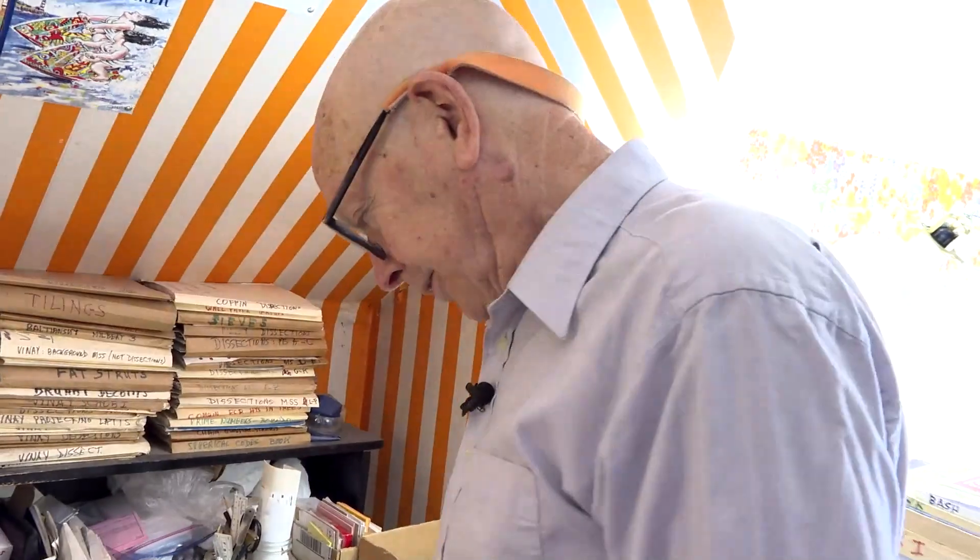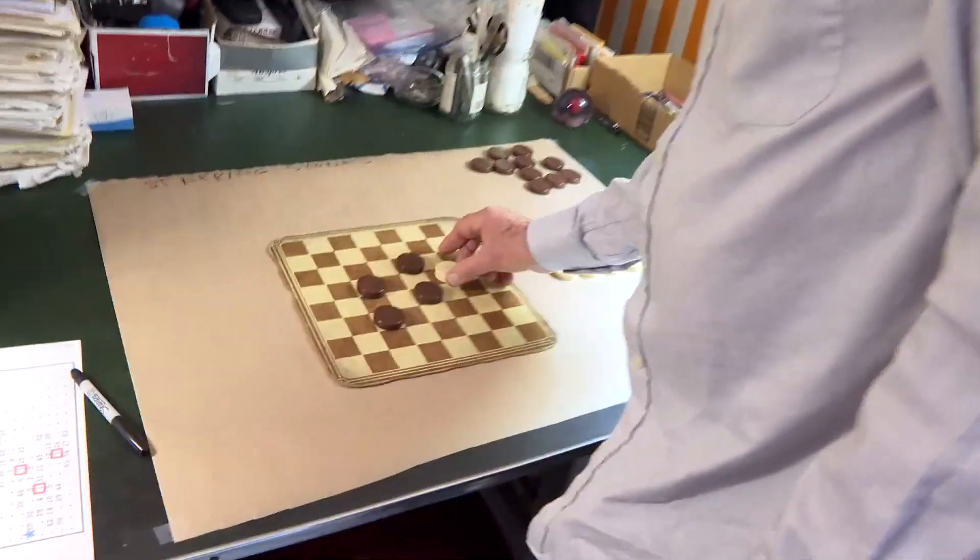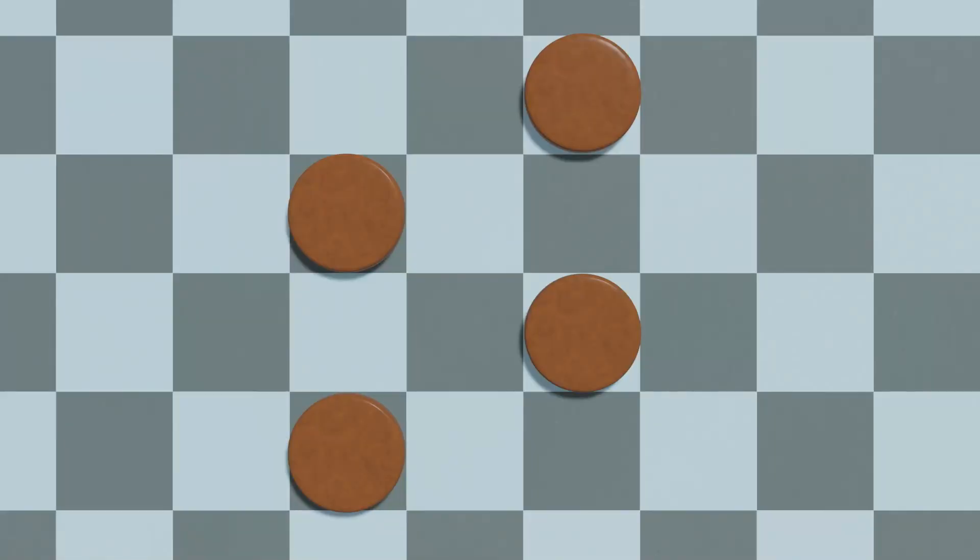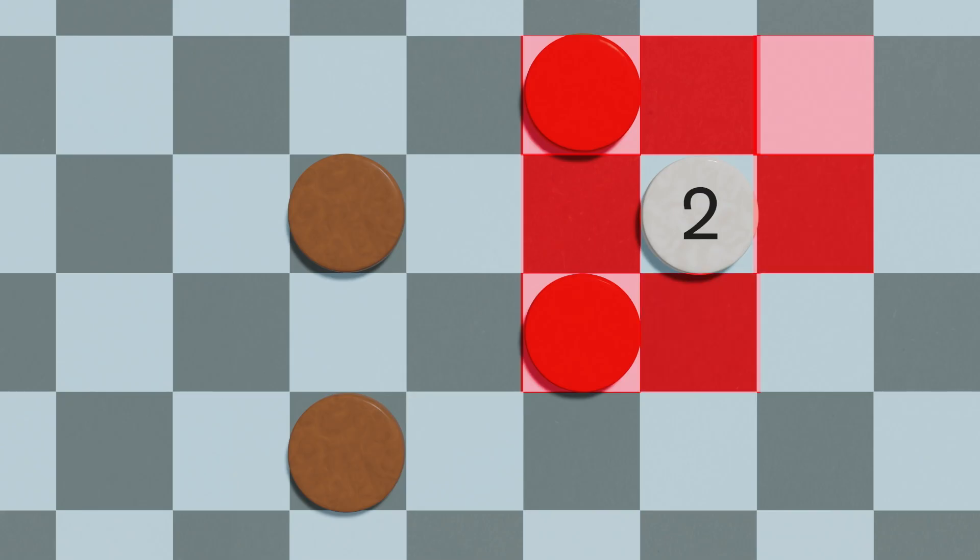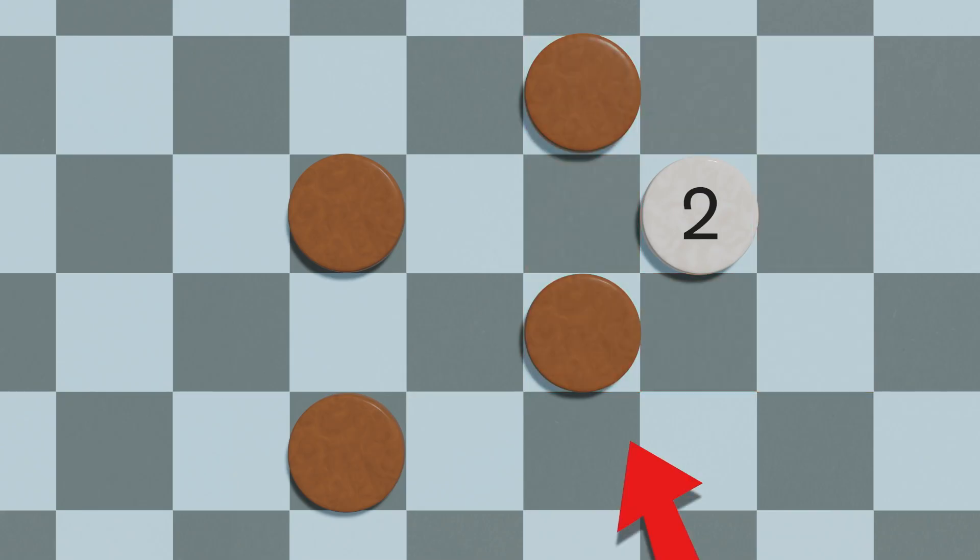There's one of each value and you can only put down a stone labeled 2 if the sum of its eight neighbors, the sum of the eight neighbors of that square is 2. We can put the 2 here because it's got two neighboring squares of value 1 and 1 plus 1 is 2.